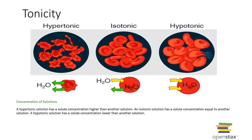When osmosis occurs, water enters or leaves a cell. Tonicity is the ability of a solution to cause a cell to shrink or swell. In an isotonic solution, the solution has the same solute concentration as the cytosol. In a hypertonic solution — referring to the solution bathing the cells — the solution has a greater solute concentration than the cytosol, meaning higher solute and lower water concentration. Water moves out of the cell, causing it to shrink and die.